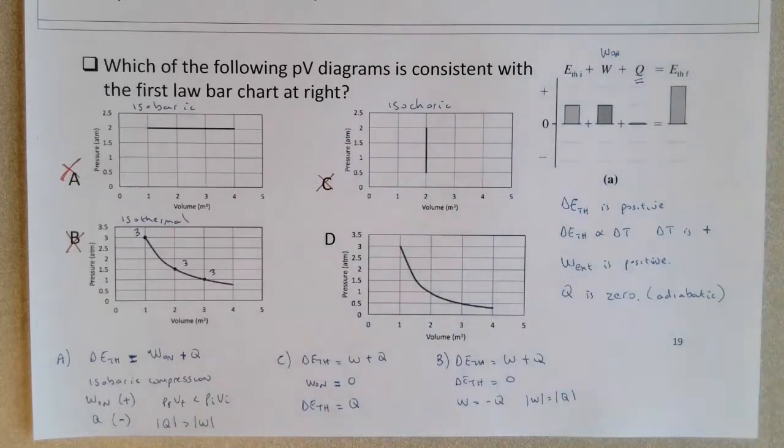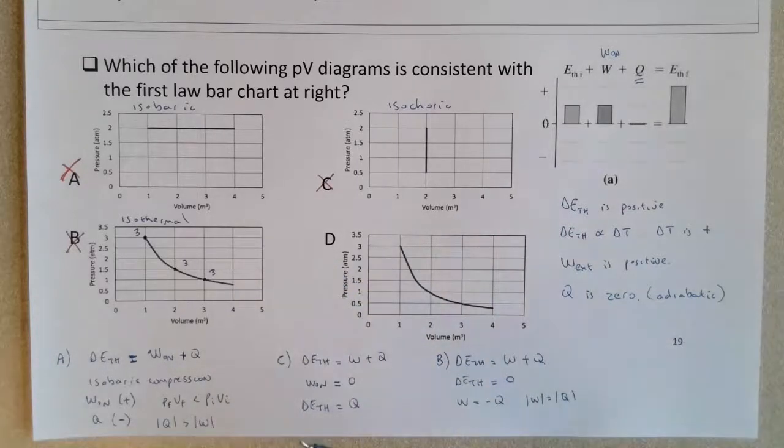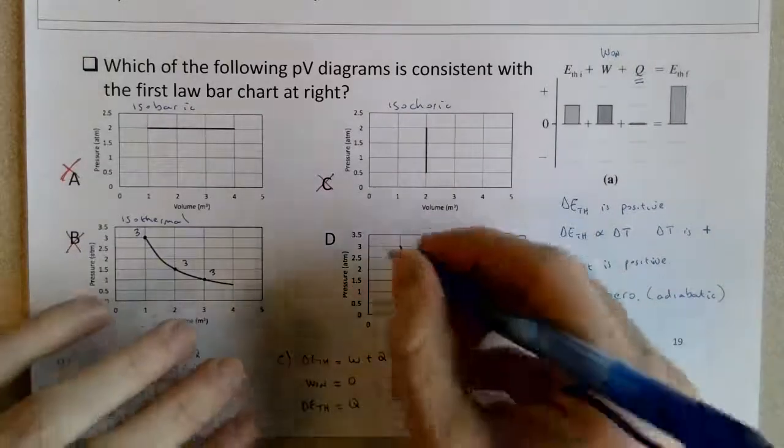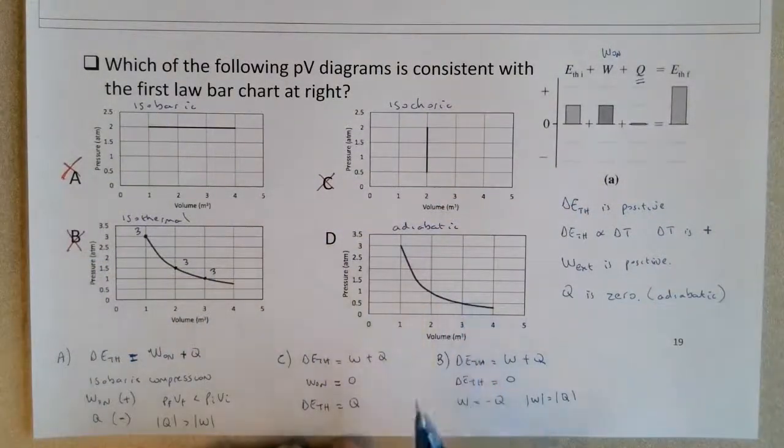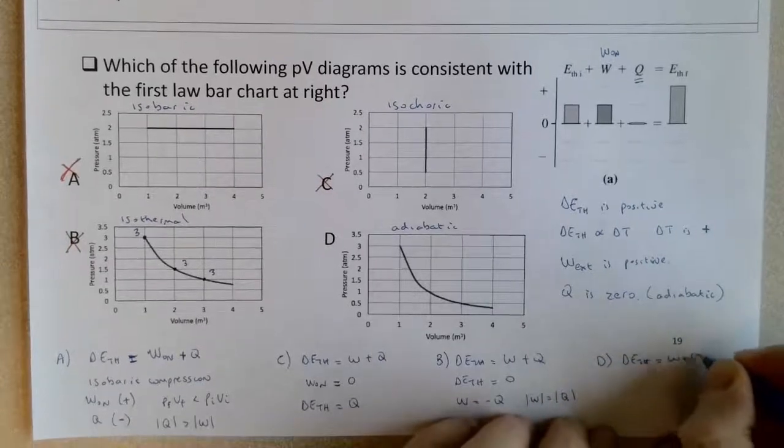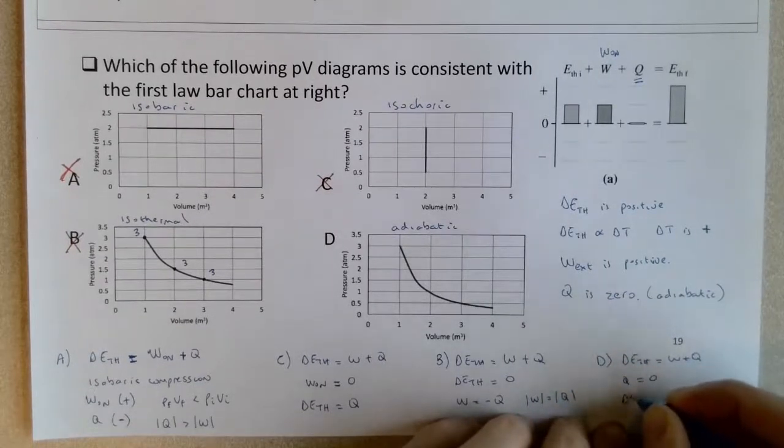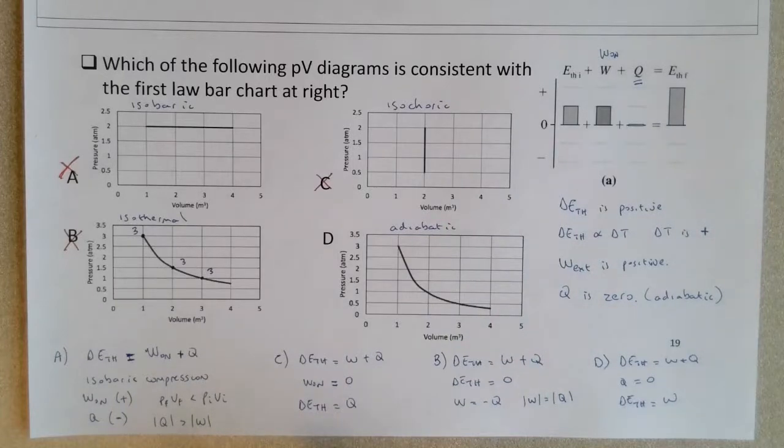But I do want to talk a little bit about D. In D, it may be difficult to determine whether it's consistent with this particular first law bar chart, but for the multiple choice there's only one choice remaining and you're not given none of the above. So it is D. D is an adiabatic. And this is an adiabat. In an adiabatic process, Q equals zero. So delta E_TH equals work on plus Q, but Q equals zero. So the change in thermal energy is only due to external work.